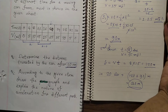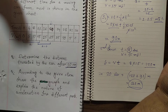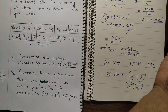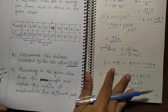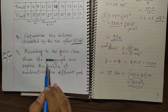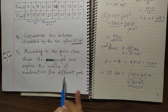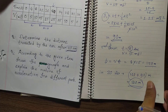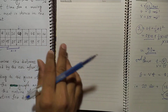This is the answer for the first part — quite straightforward. The second part of the question asks: according to the given data, draw the graph and explain the nature of the acceleration for different parts. We need to look at the data and draw the velocity-time graph.